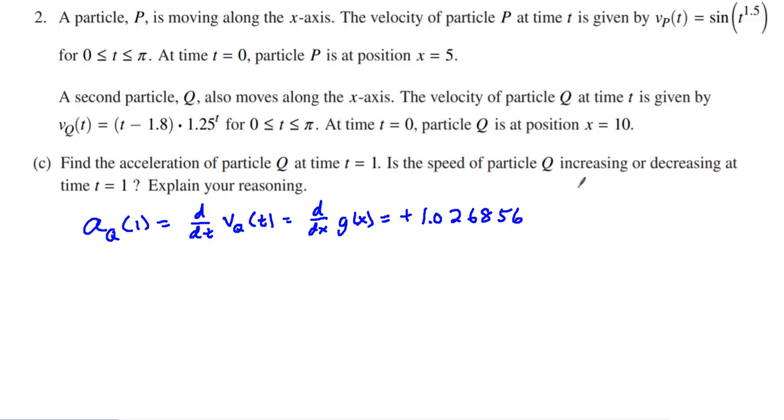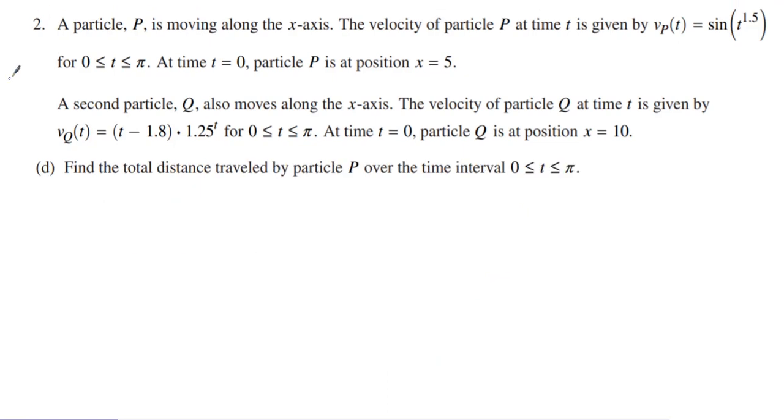Now, they ask, is the speed increasing or decreasing? Is the speed increasing or decreasing? Well, what do we know? Remember, the velocity, the velocity of particle Q at 1 was negative 1. So you can see these signs are not the same, which means the speed is decreasing. The speed is decreasing. So speed is increasing if the acceleration and velocity signs are going to be the same. Speed is decreasing because the acceleration at 1 is a positive value and the velocity at 1 is a negative value. And so that is your reasoning. That is explaining your reasoning using quantitative means.